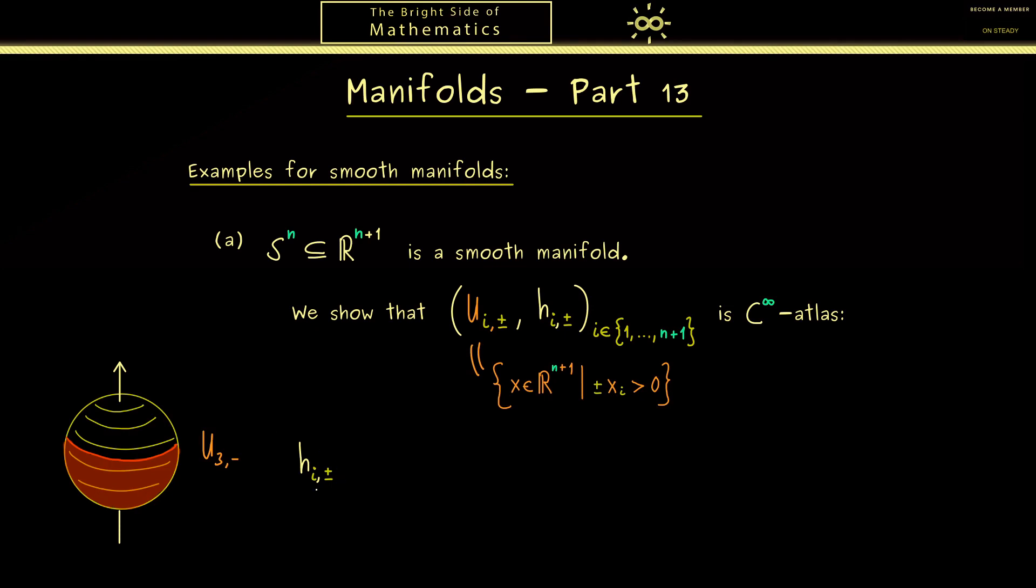More generally, the map h_{i,±} will map a given vector with n+1 components to a vector with only n components. More precisely, the trick is that we omit the ith component. This means that we go to x_{i-1} and then comes x_{i+1}. So this is what you already know. This is what the chart should do.